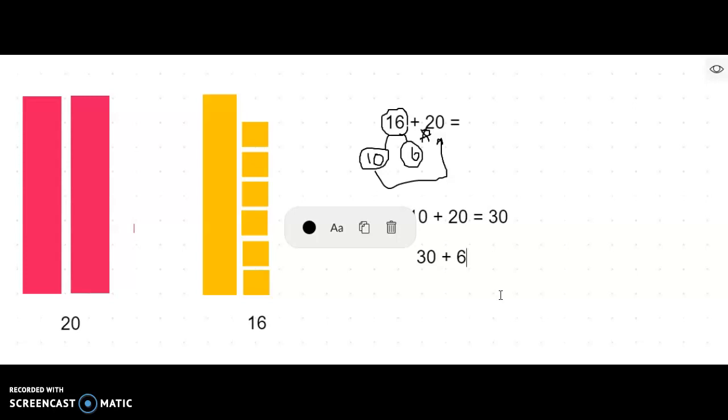All right. Well, 30 plus 6 equals 36. So I guess 16 plus 20 equals 36 too, right? All right. Thank you for helping me with that.